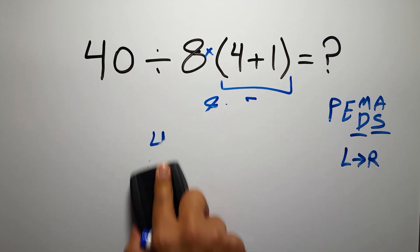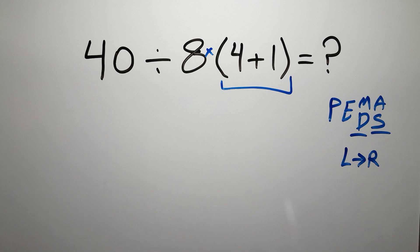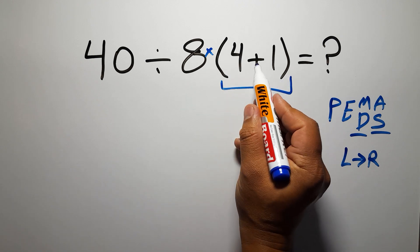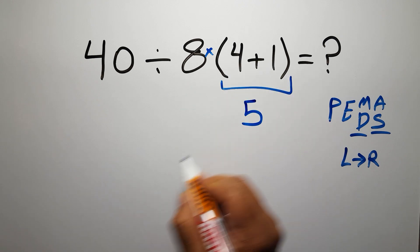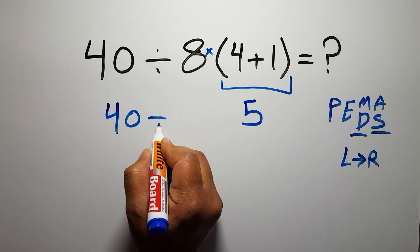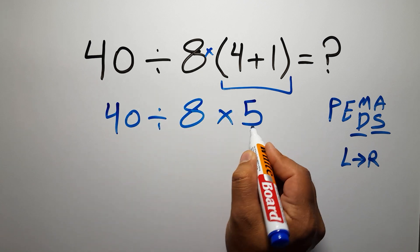Inside these parentheses we have 4 plus 1, which equals 5. So now we have 40 divided by 8 times 5.